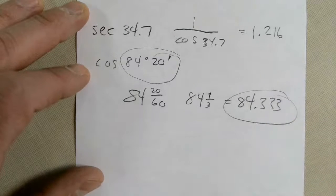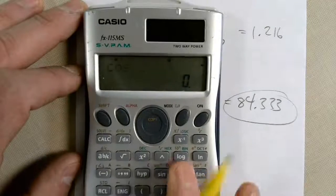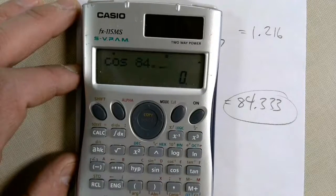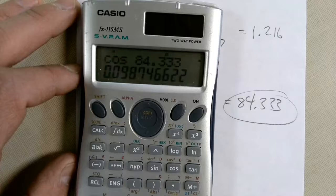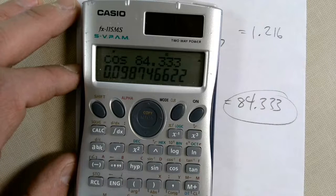Okay, so now you can use this and just press cosine. Cosine of 84.3. And the answer is 0.0987.